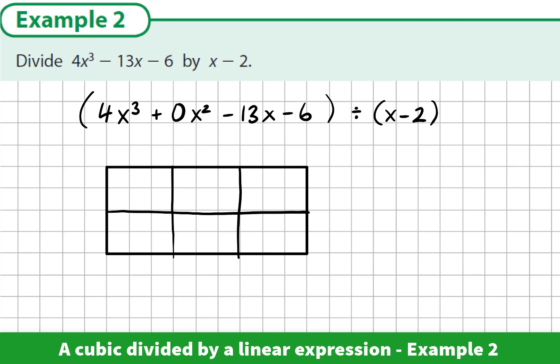We also know from experience that the top left-hand corner contains the x cubed term, so we put our 4x cubed in here. The opposite corner of the array contains the constant term, the negative 6. The linear factor that we're dividing by, the x minus 2, goes on the left-hand side.